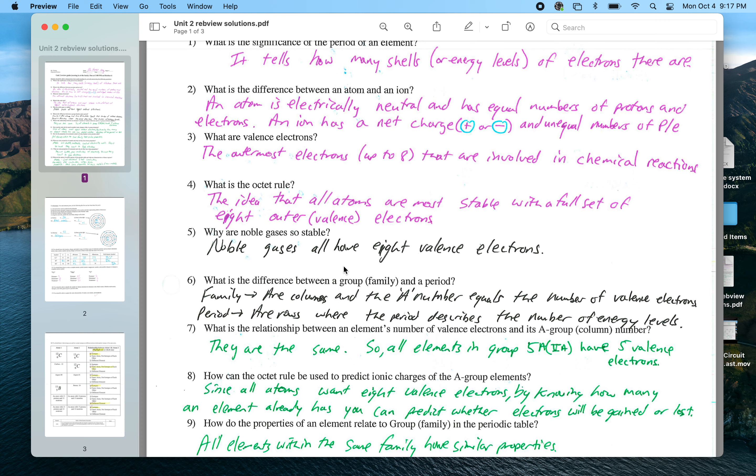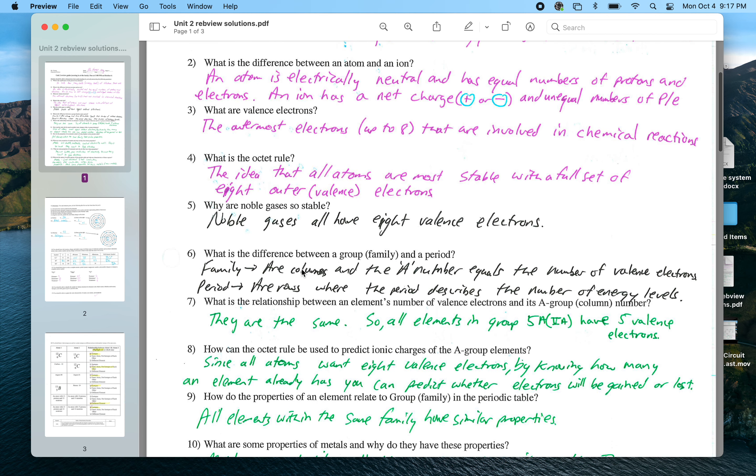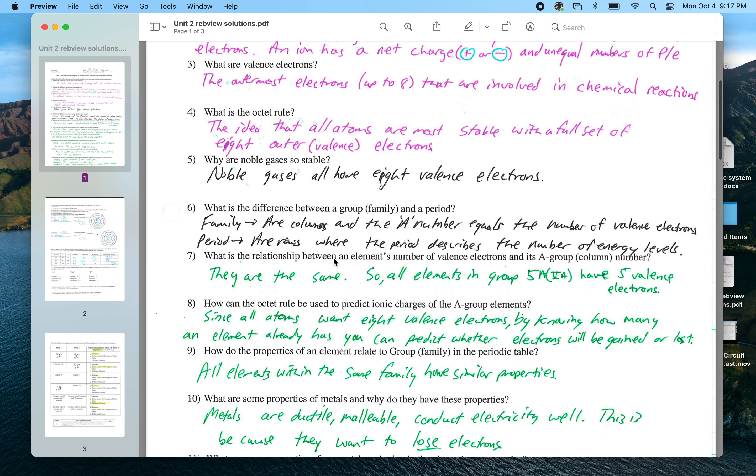They don't need to react to get that full set. The difference between a group and a period: a family or a group are the columns, and the A number represents the number of valence electrons. Periods are the rows, and the period describes the number of energy levels or shells. The relationship between valence electrons and the A number - they're the same. So elements in group 5A all have five valence electrons, elements in group 7A all have seven valence electrons.